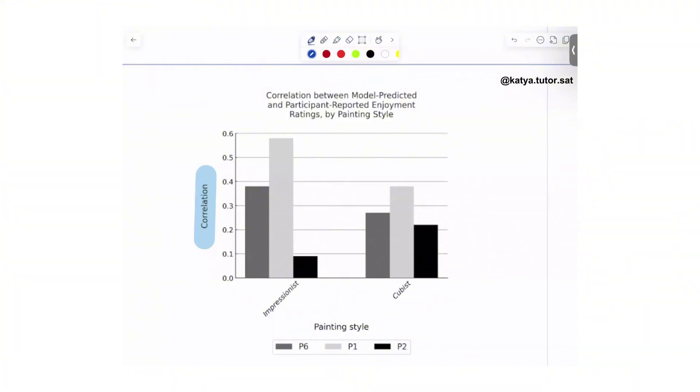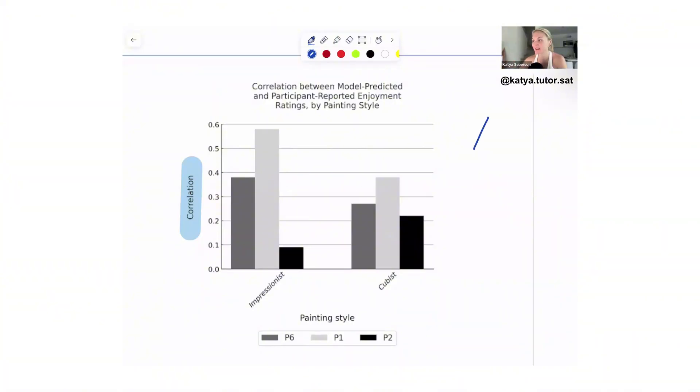I read correlation between model predicted and participant reported enjoyment ratings, and I thought those were going to be two different things - they are two different things. Correlation is a relationship between x and y. What is the x? What is the y? The x is the model predicted, and then the y is the participant reported. So x will be the score that the model predicted and y would be the score that the participant gave. The participant is looking at an impressionist painting and says I think it's a four, and then looks at a cubist painting and says I think that's a four on the enjoyment level.